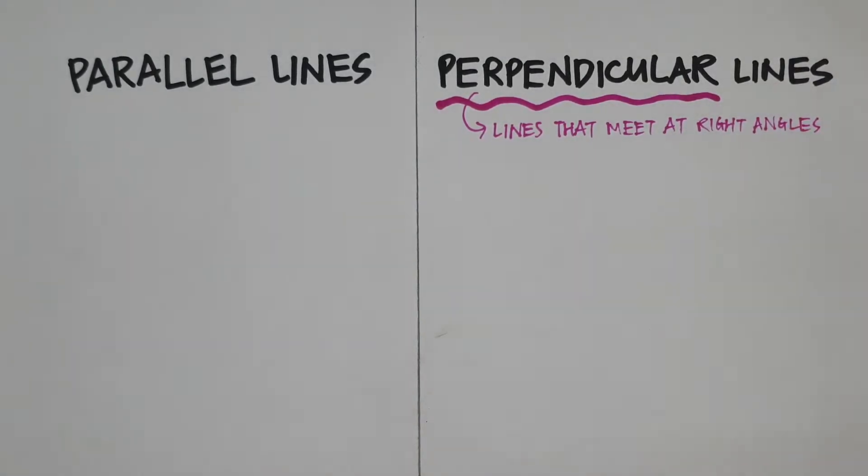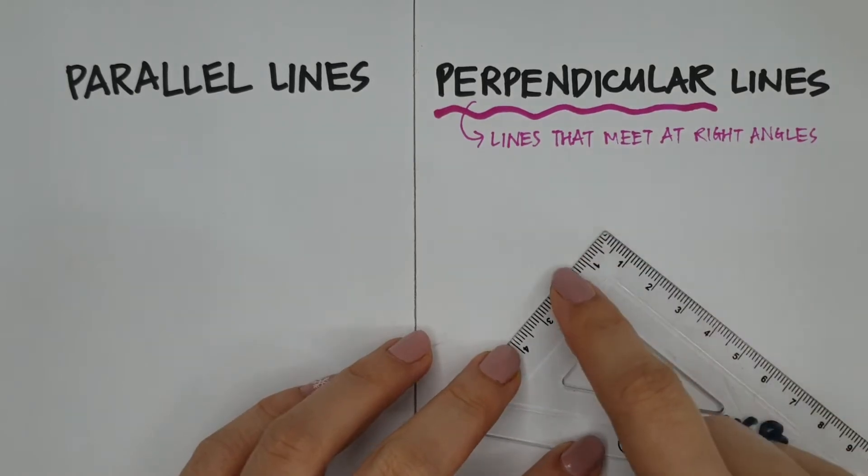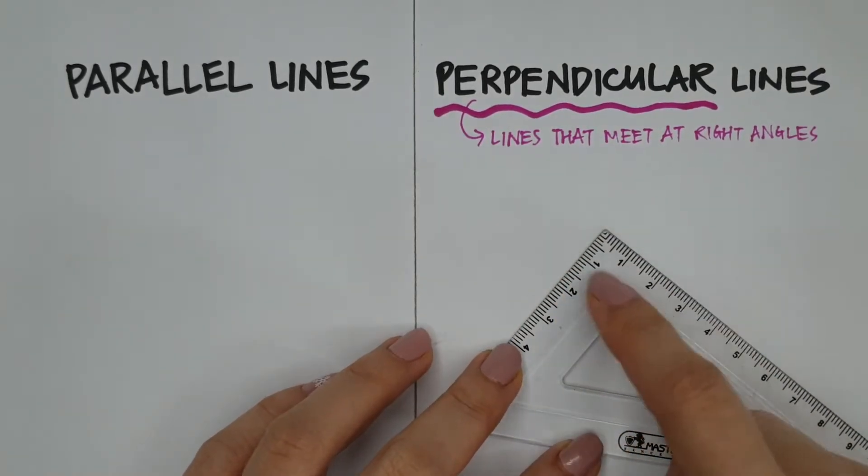A right angle, when we look at a set square, would be the amount of turning from this side to the other side. That is a right angle.